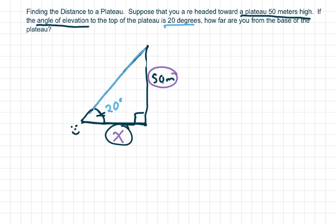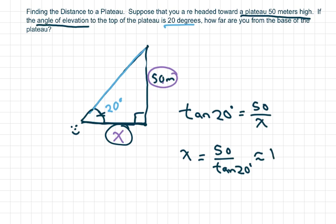We're going to cross multiply. We get x equals 50 over tan of 20 degrees, which is approximately 137.37 meters.